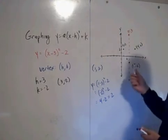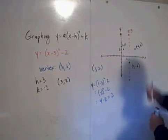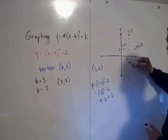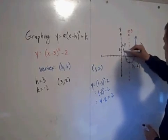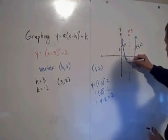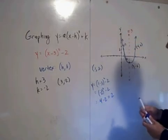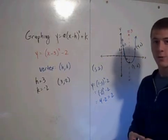Now that we have 3 points plotted, we can draw in our graph, our parabola. And this is how you graph a quadratic in vertex form.